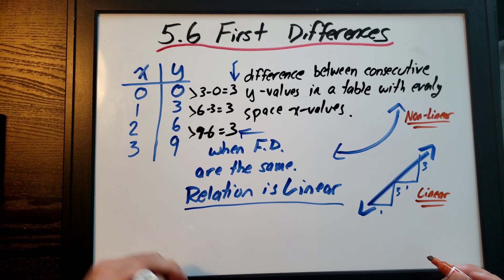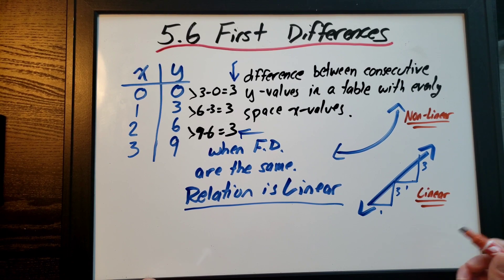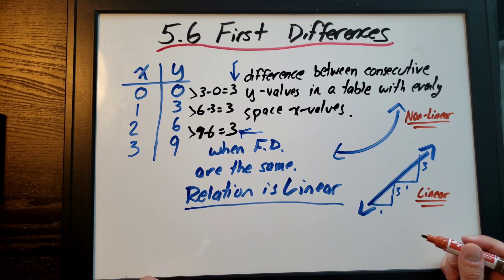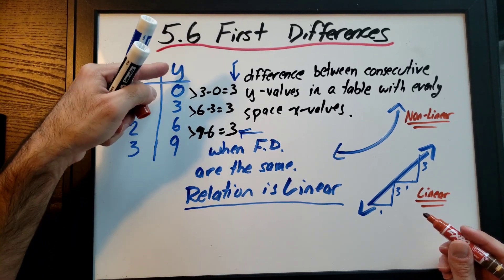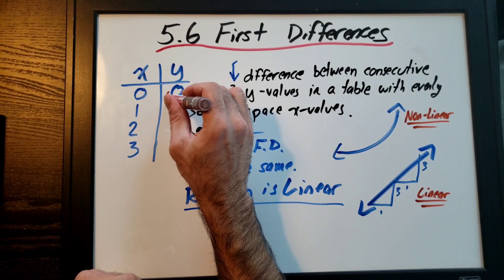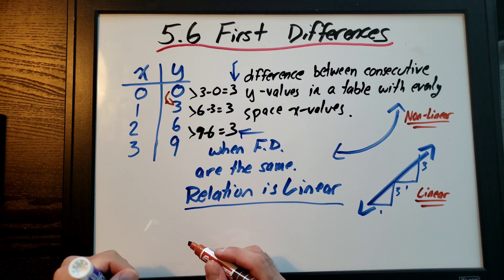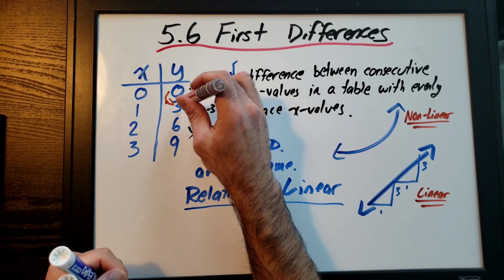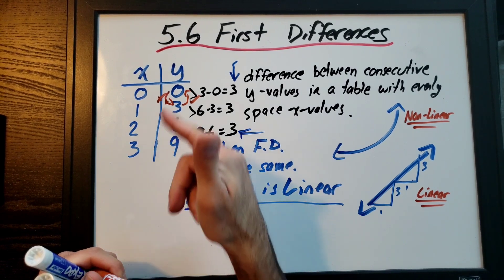Okay, so just determining between nonlinear and linear is a really common question in this chapter. And there's many ways of doing it. Again, we can use a table, we can use a graph, and I'll show you some other strategies at another time. But first differences are pretty straightforward. You just subtract the Y values. And just a reminder, do not do it this way. 0 minus 3 is not 3, right? It's negative 3. So we want to go this way. Okay, the bottom minus the top.